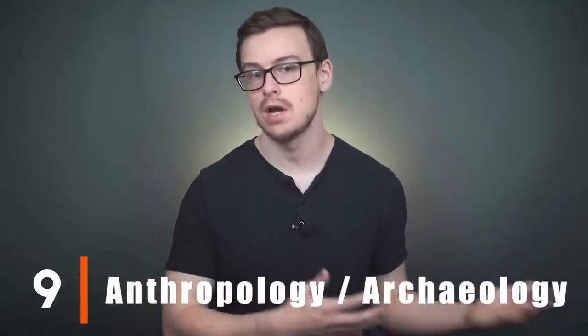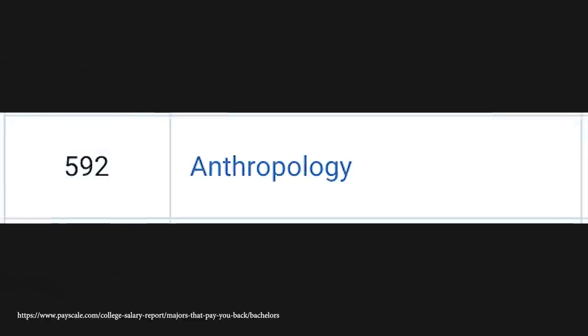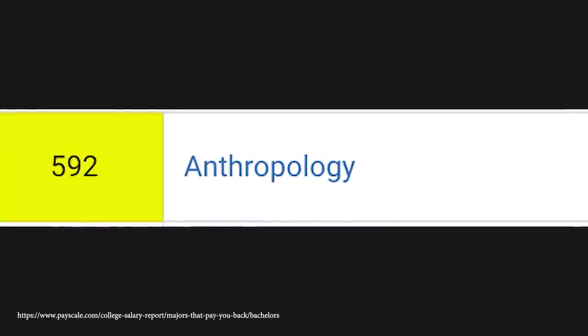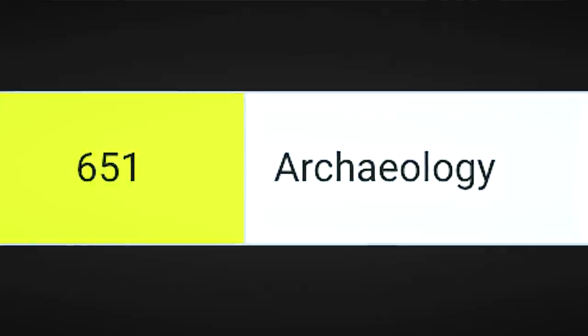Number nine on the list, I decided to group these together. It's going to be anthropology and archaeology. Now I'm not going to go over the numbers on these, they're both really bad. Archaeology is a little bit worse. So I'll just tell you the rankings instead. It's going to be 592 for anthropology and 651 for archaeology. And by the way, looking up the numbers on all of these different degrees, they're pretty bad in the first place, but they're actually worse than what's shown on a lot of the sites because of the fact that those are people who actually report their income.